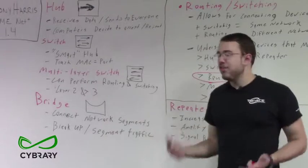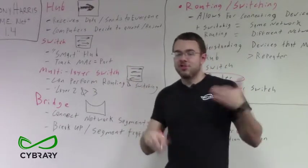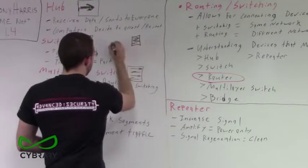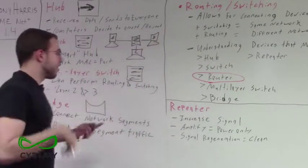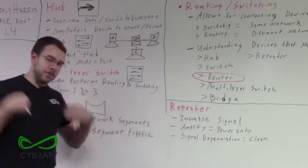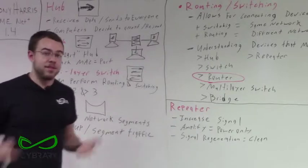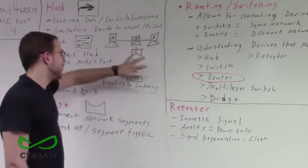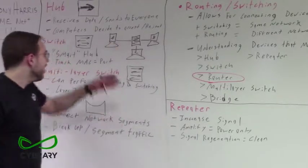Our next device is a switch. Switches are a step up from hubs — they're essentially a smart hub. Our switches actually track MAC addresses and which port they're on. Using the same diagram: computer A, B, and C are all plugged into our switch. The first few seconds after our computers are plugged in, our switch operates as if it's a hub, because when devices are first connected, the switch doesn't know what MAC address is assigned to which port.